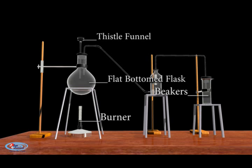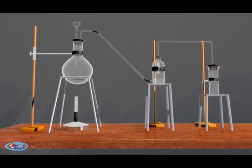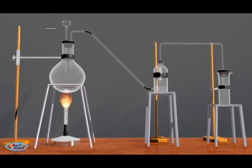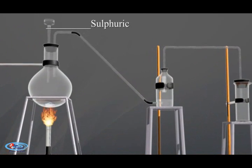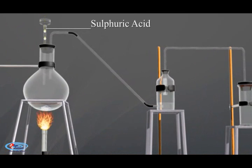Now let us see the procedure. Set up the apparatus as shown in the animation. Place common salt like sodium chloride in the flat bottom flask and pour concentrated sulfuric acid through the thistle funnel.